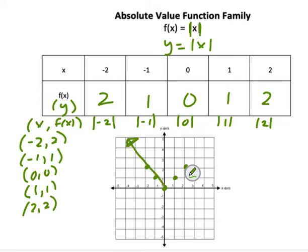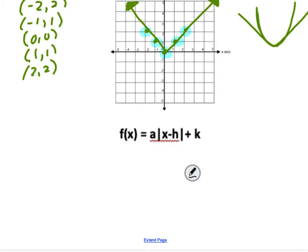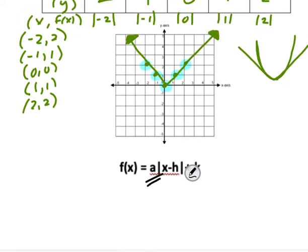When we graph the absolute value function, it will definitely be straight lines going out — that's the difference from the parabola, which has a nice curve. Absolute value gives straight lines, so make sure you can tell the difference. That's the parent graph for absolute value. Later in this chapter, we'll see what happens when we put something multiplying in front, or add and subtract on the end or inside — it might get wider, skinnier, or flip upside down.